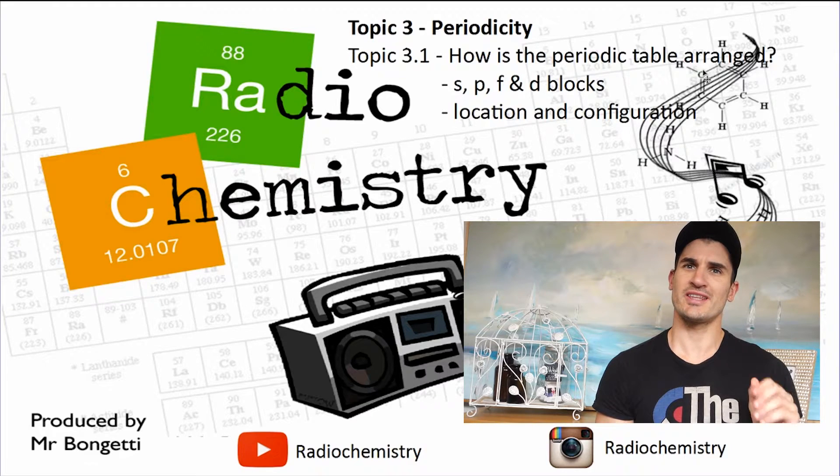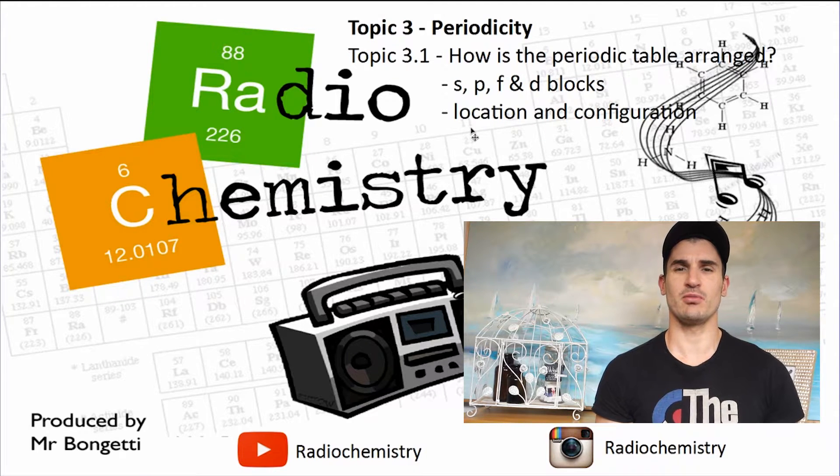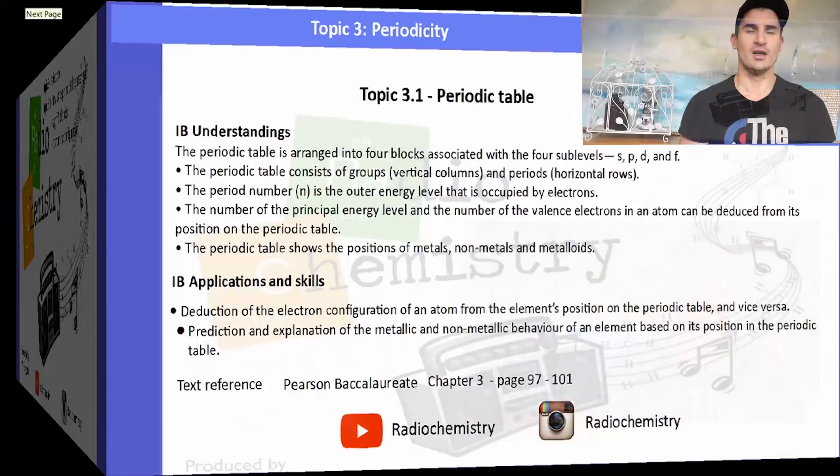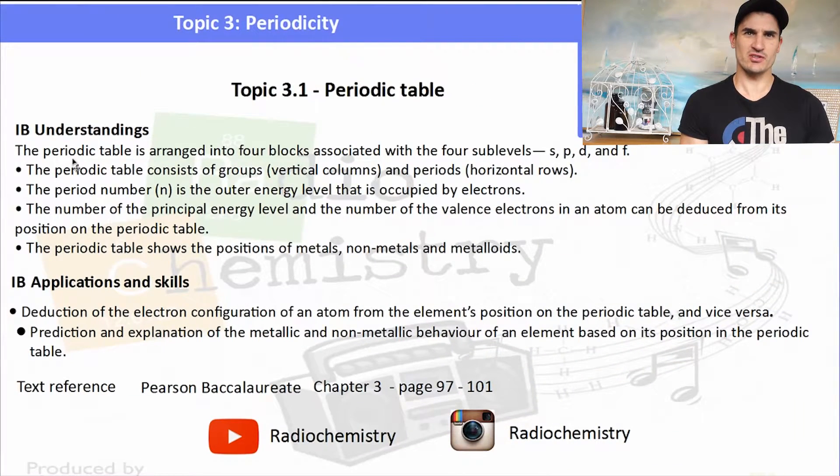Topic 3.1: How is the periodic table arranged? We look at the S, P, F, and D blocks, and then we talk about location and electron configuration. The IB understandings and applications focus around having an understanding of the periodic table and then talking about the number of energy levels and the number of outer shell electrons.